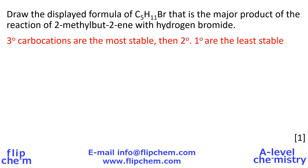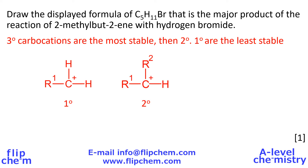A carbocation contains carbon with a full positive charge. In a primary carbocation, the carbon with the positive charge is attached to two hydrogen atoms, where R represents any organic group. In a secondary carbocation, the carbon with the positive charge is bonded to one hydrogen atom. The tertiary carbocation has the carbon with the positive charge bonded to zero hydrogen atoms. The most stable is the tertiary carbocation, and the least stable is the primary carbocation.